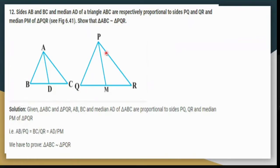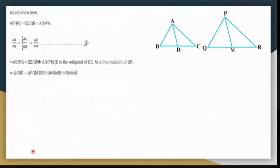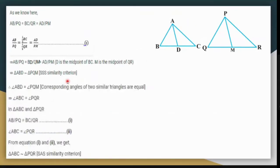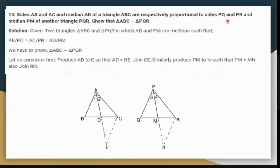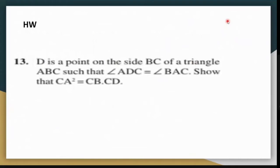You can see the proof: triangle ABD similar to triangle PQM by SSS criterion gives angle ABD equals angle PQM, and then by SAS the bigger triangles are proved similar. Question 13 is a simple question you can do on your own.